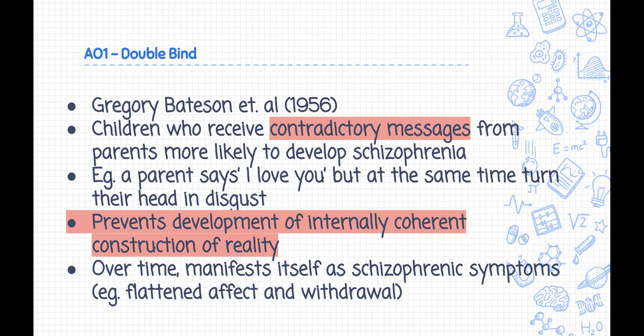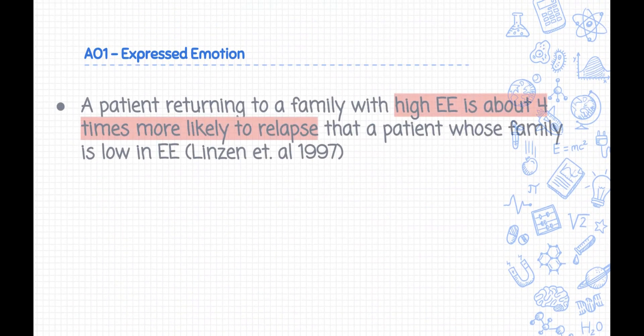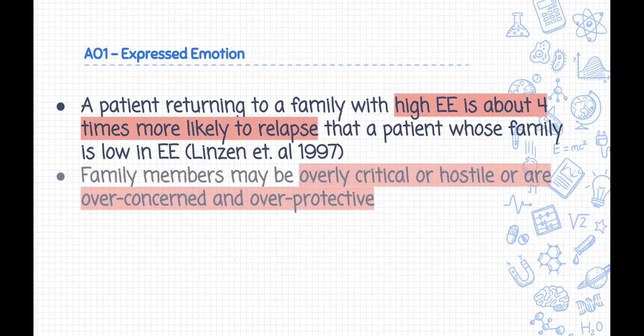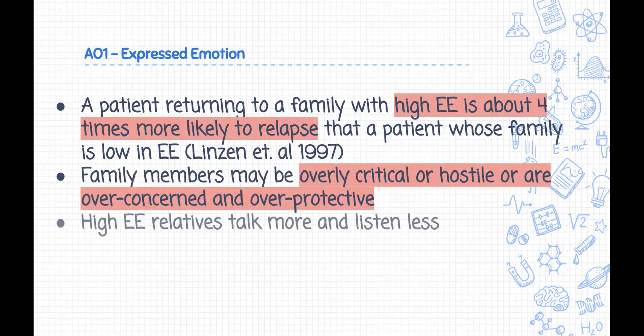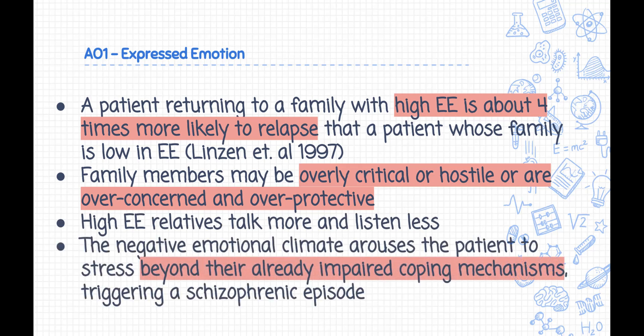In the long run, this manifests as typically schizophrenic symptoms such as flattening of affect, social withdrawal, delusions and hallucinations, incoherent thinking and speaking, and in some cases paranoia. Regarding expressed emotion, a negative emotional climate and high degrees of expressed emotion are associated with schizophrenic relapse. In high EE families, family members talk more and listen less, and may be overly critical, hostile, overconcerned, or overprotective.